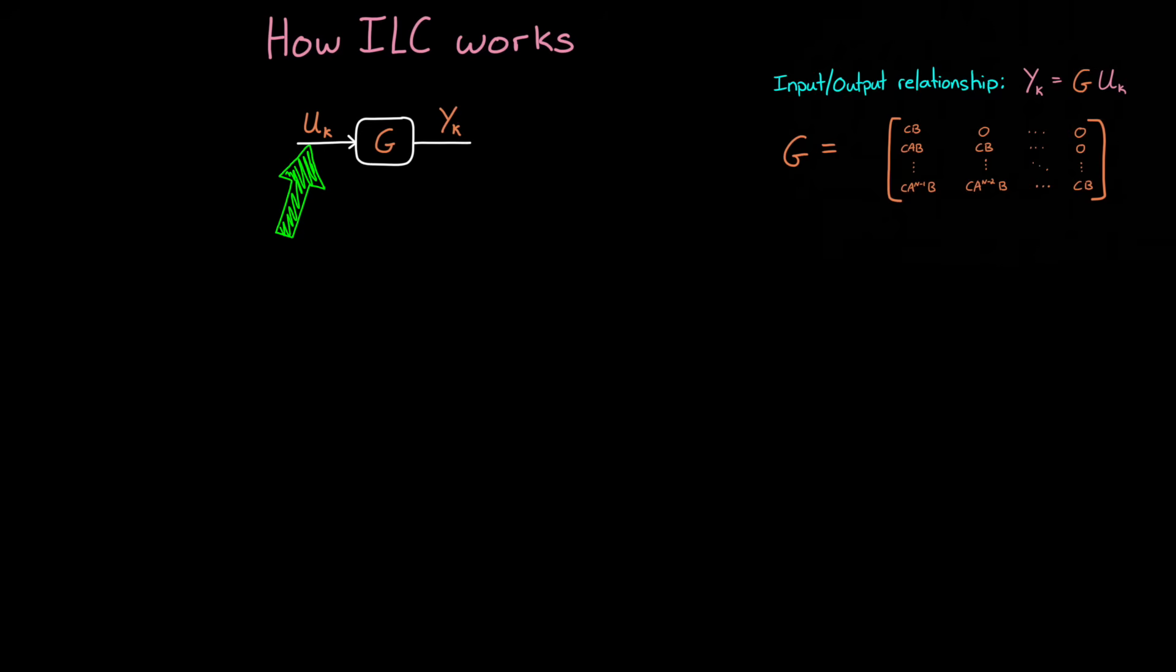Since u changes from one iteration to another, we'll say that this particular one is the kth iteration of u, and it produces the kth iteration of y. All right, so u is just a sequence of hard-coded open-loop commands. And we want to know how well this particular set of inputs does at making the system follow some reference.